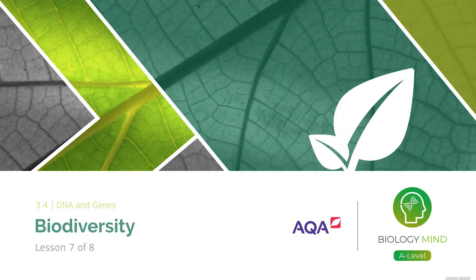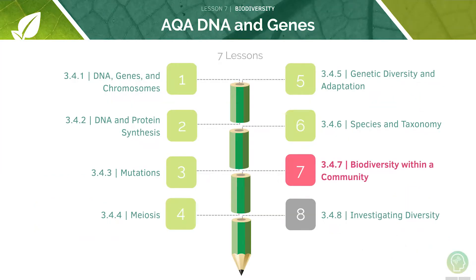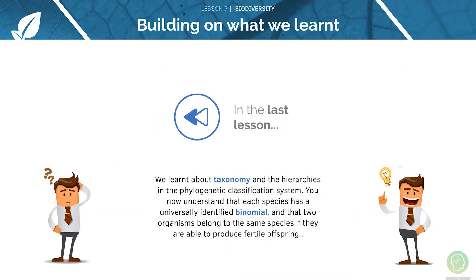Welcome to lessons seven and eight in this tutorial covering biodiversity. This is the seventh video in our series of eight lessons on the topic of DNA and genes. In the last lesson we learnt about taxonomy and phylogenetic classification, and we also know that each species can be named using the binomial system.